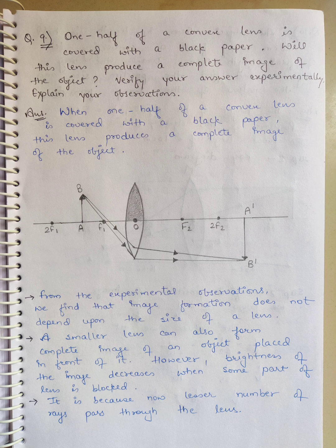From the experimental observations, we find that image formation doesn't depend upon the size of a lens. A smaller lens can also form a complete image of an object placed in front of it. However, the brightness of the image decreases when some part of the lens is blocked. It will be reduced because we have covered half parts.